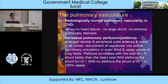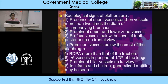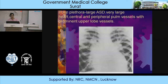Radiological signs of plethora include: presence of end-on vessels more than 2 times the diameter of the accompanying bronchus; prominent upper and lower zone vessels; en face vessels below the level of the 10th posterior rib on frontal view; prominent vessels below the crest of the diaphragm; right descending pulmonary artery wider than the trachea; more than 6 vessels in the peripheral one third of the lungs; and prominent hilar vessels on the lateral view. In infants and children, generalized haziness may be seen. You can see pulmonary plethora with a very large heart, central as well as peripheral pulmonary vessels, and prominent upper lobe vessels.